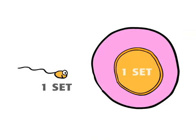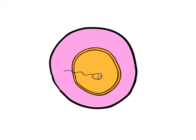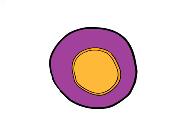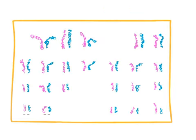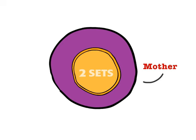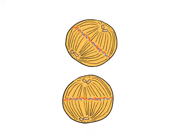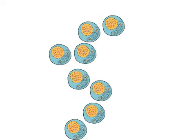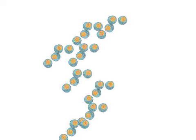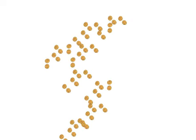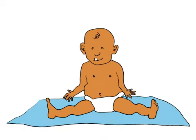When sperm and egg cells join together at fertilization, they create a single cell with two complete sets of 23 chromosomes — one set from your mother and one from your father. This single cell will divide to create new cells over and over until it creates a child.